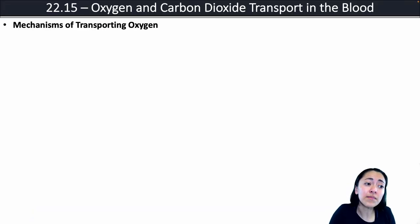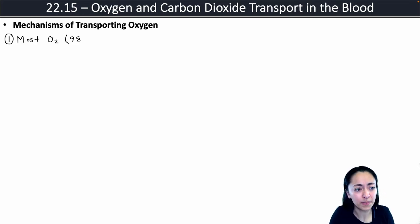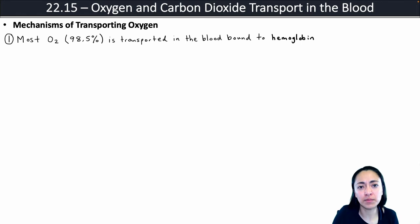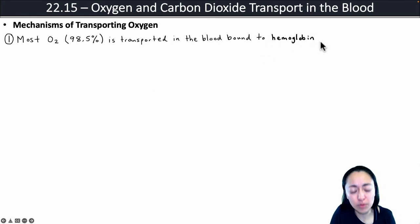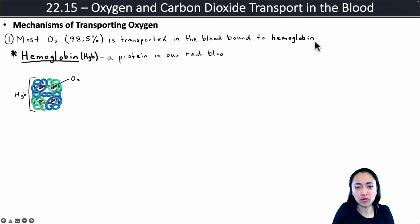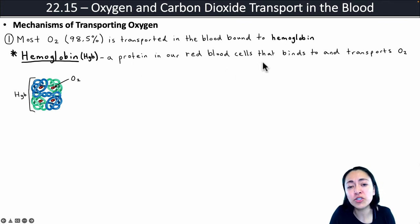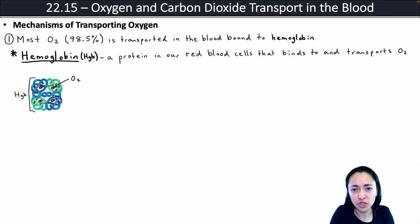Now let's look at the main mechanisms our body uses to transport oxygen in our blood. Most of the oxygen — about 98.5% — is transported in the blood bound to a protein known as hemoglobin. Hemoglobin, sometimes abbreviated as HGB or just HB, is a protein in our red blood cells that binds to and transports oxygen. Oxygen is not very soluble in our blood, so it's very hard for our blood to carry oxygen unless it is bound to hemoglobin.